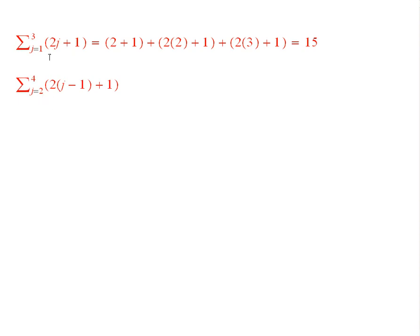Now, notice that this sum is going to be exactly the same as this sum. What did I do? Everywhere I saw a j here in this sum, I put a j minus 1, and then I let the index start at 2 instead of at 1. Now, if you start plugging in values for j, you end up with exactly the same collection of numbers, which then, when you add them together, you will get the same number.